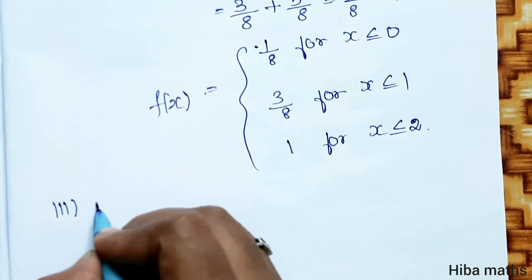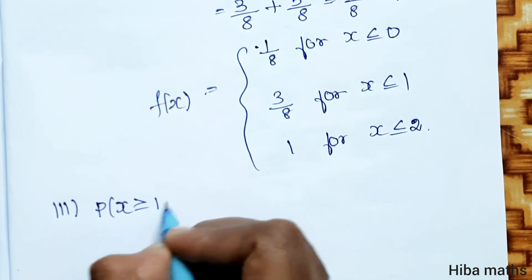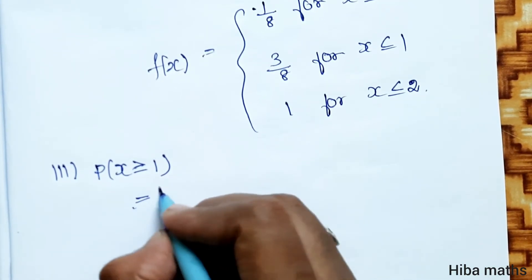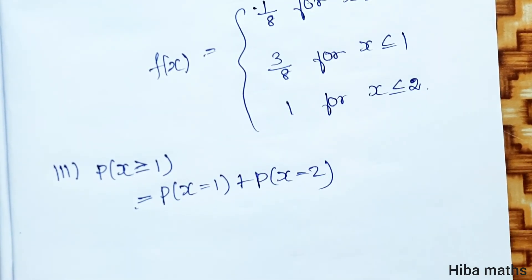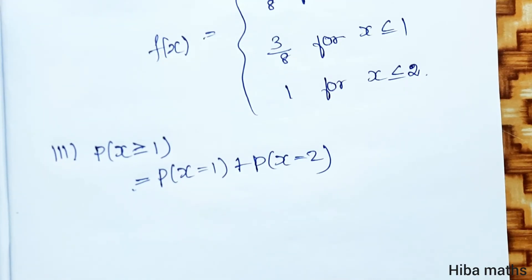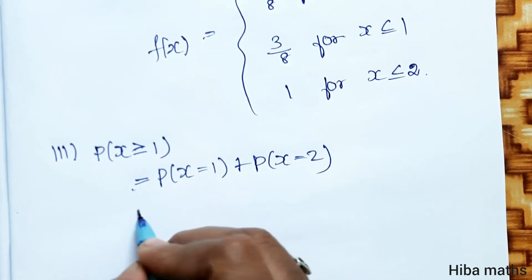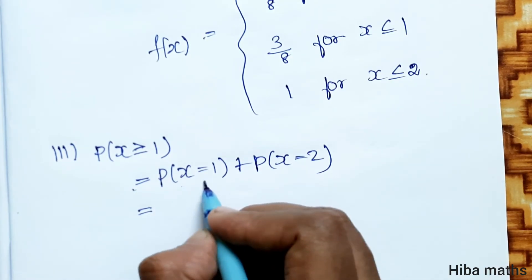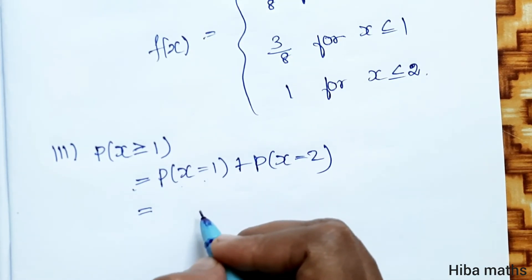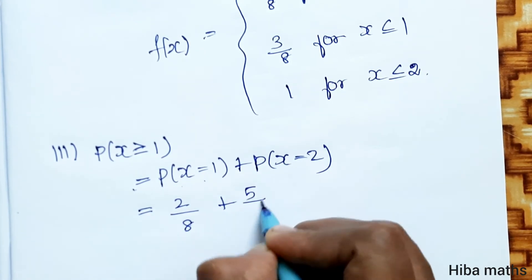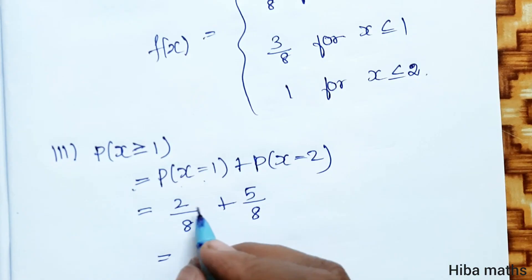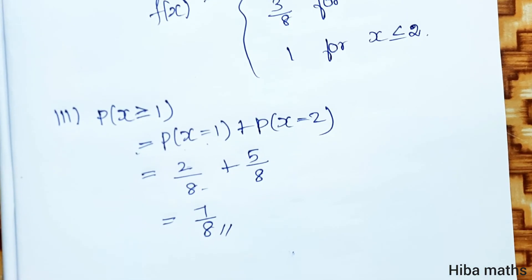Part iii: P(x ≥ 1). The value of x greater than or equal to 1 equals P(x = 1) + P(x = 2) = 2/8 + 5/8 = 7/8. That is the answer. Thank you so much for watching.